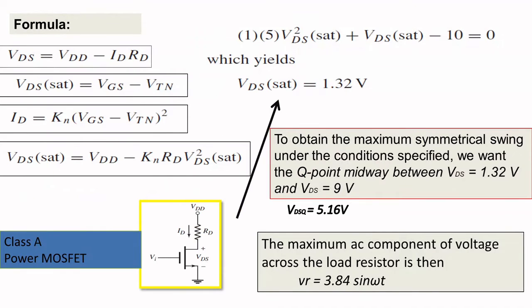So first I will give you the formulas used to determine the values. When you apply KVL on the output side you get this equation, as explained in the theoretical part. The basic equation is VDS saturation equals VGS minus VT. We can write this in terms of VDS saturation, and applying the ID current gives VDD minus KN times (VGS minus VTN), where VGS minus VTN is your VDS saturation, so VDS equals VDD minus KN times VDS saturation squared times RD.